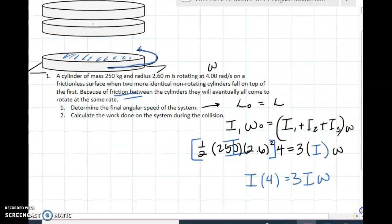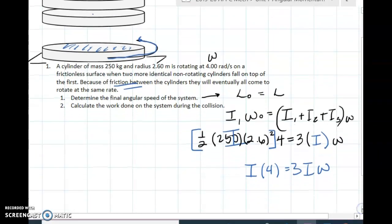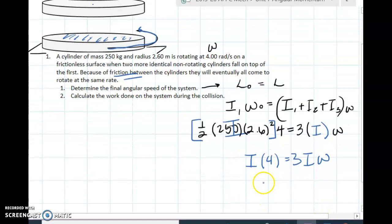They were all identical. I hope I haven't done this wrong. So then 4 thirds is equal to omega, and that would be 4 thirds radians per second.